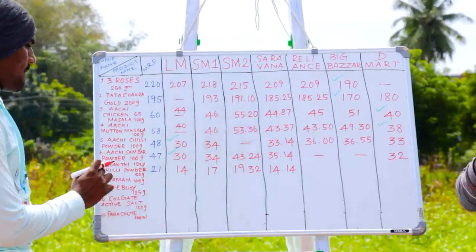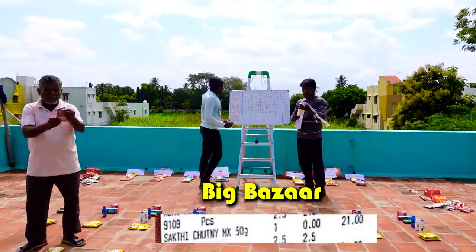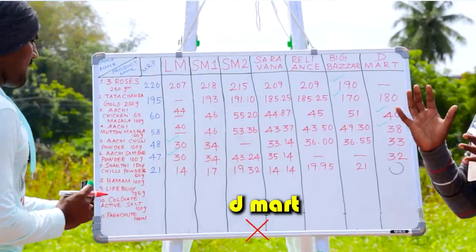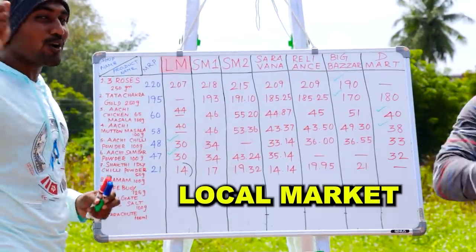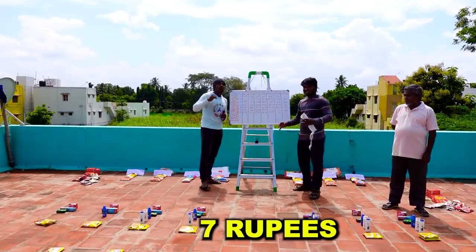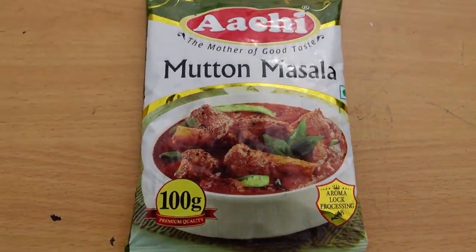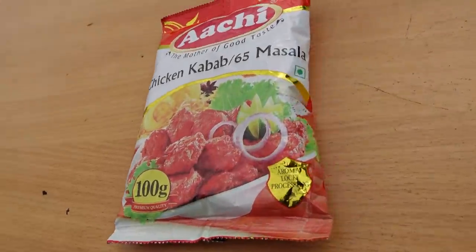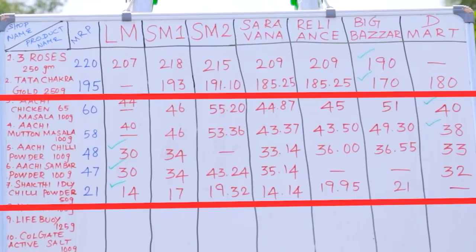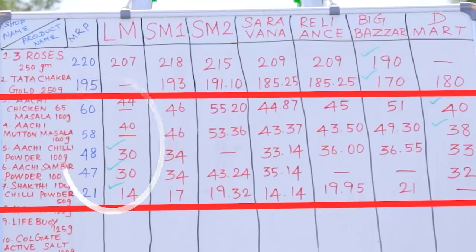Big Bazaar is 20. This is the product in the local market. How much of MRP is 20? We will see the price of this product. If you buy the product, you can buy the product at the listed price.